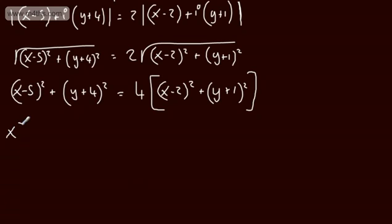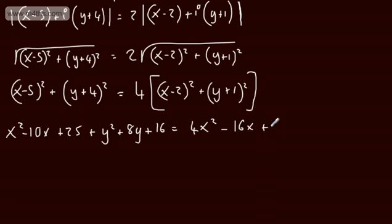So left hand side, let's expand this out, x squared minus 10x plus 25 plus y squared plus 8y plus 16 will be equal to, and I'm going to multiply through by the 4, 4x squared minus 16x plus 16 plus 4y squared plus 8y plus 4.